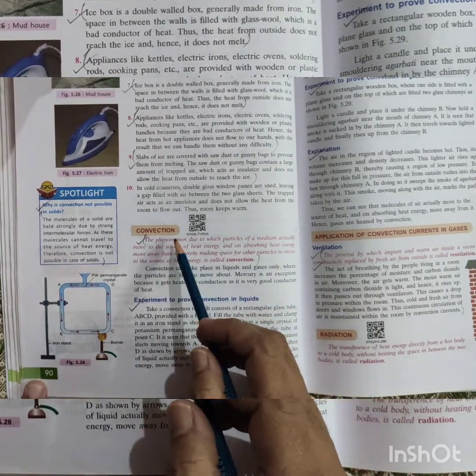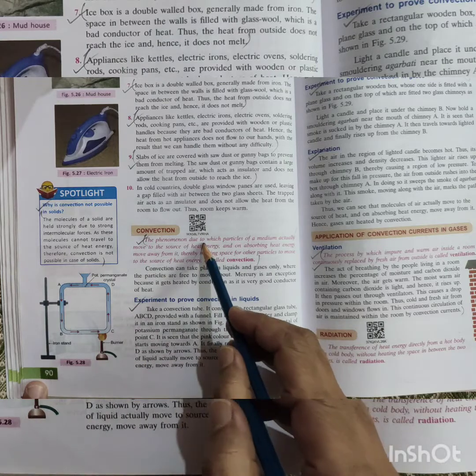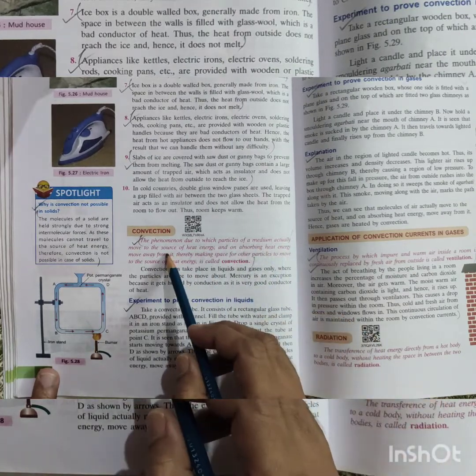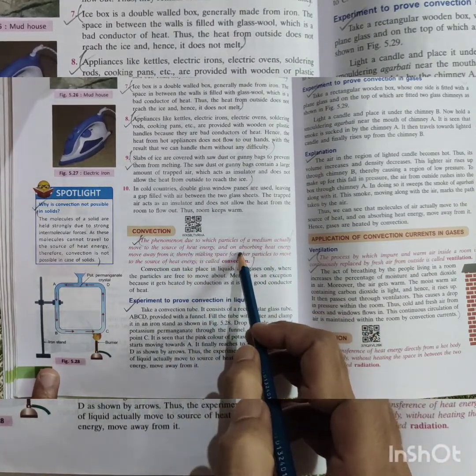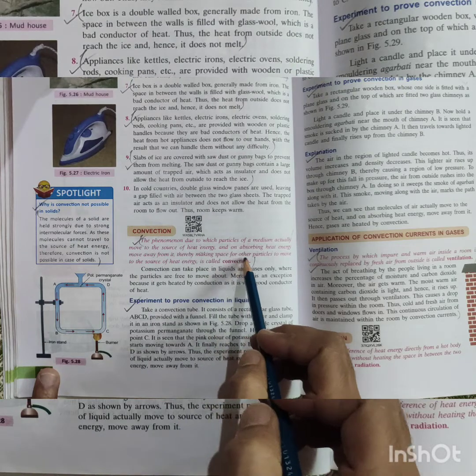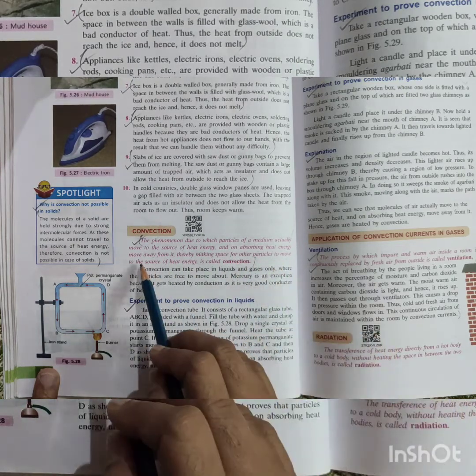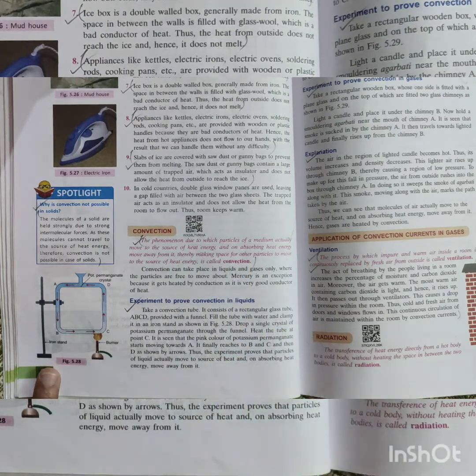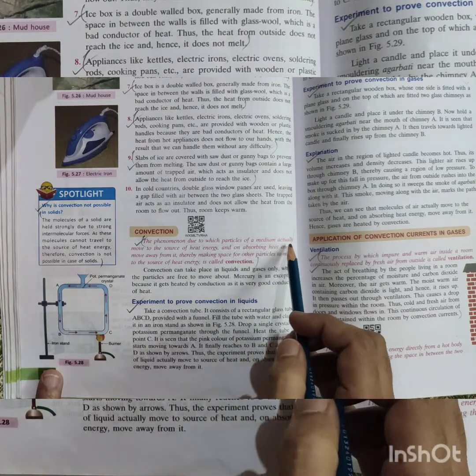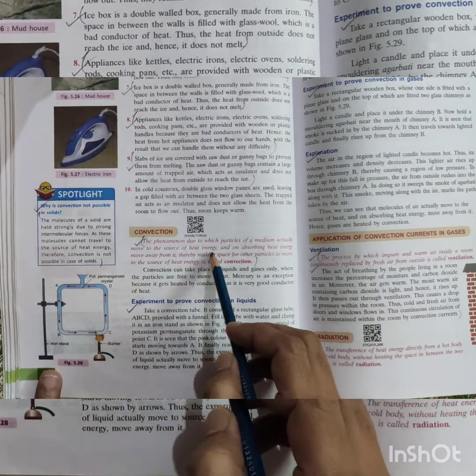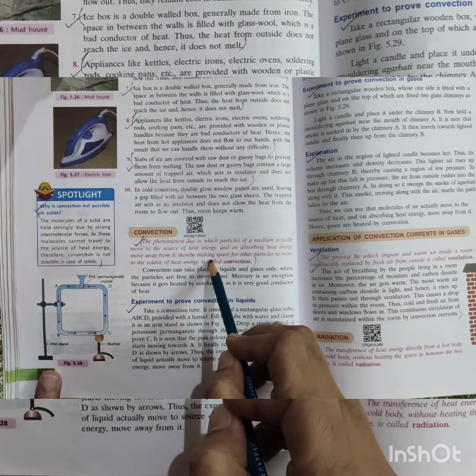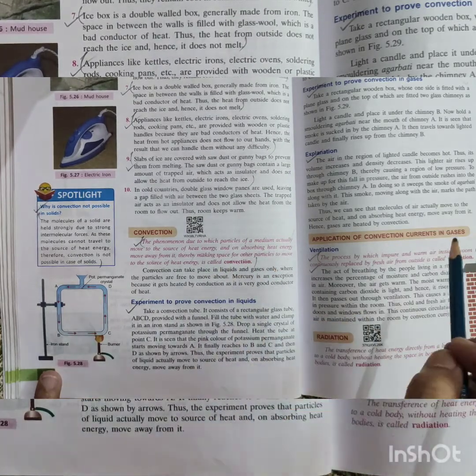Next we have convection. I'll just read the definition first. The phenomenon due to which particles of a medium actually move to the source of heat energy and on absorbing heat energy, move away from it, thereby making space for other particles to move to the source of heat energy is called convection. This is called convection.